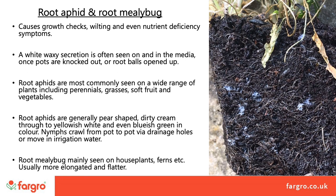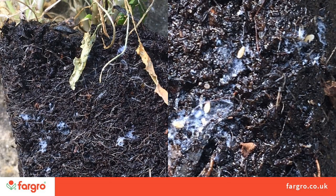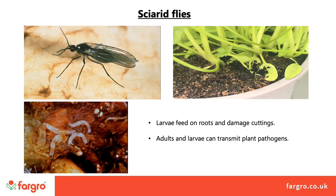Root mealybug is often seen on house plants. These are usually more elongated and flatter in shape. You can see in the left-hand photo that the white waxy secretion is visible when the plant is knocked out. This can be confused with fungal growth, but it's only when you look closely, as in the right-hand photo, that you actually see the small root mealybugs.